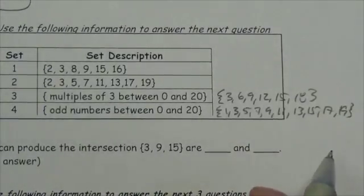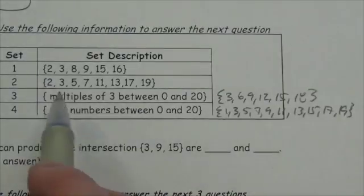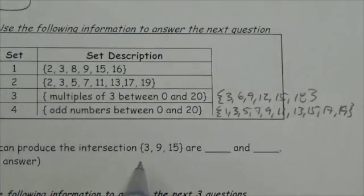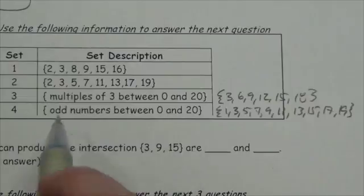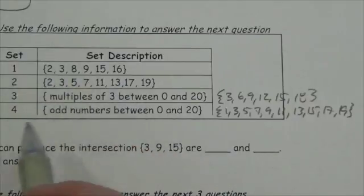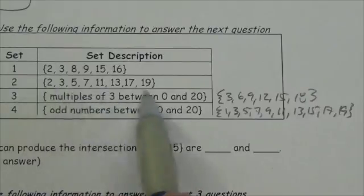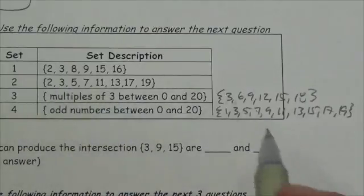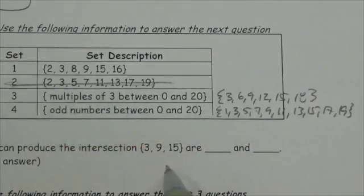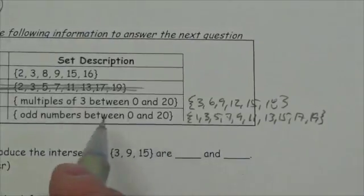Now where do these things intersect? Let's just take a look at Set 1 here. Set 1 has got 3, 9, and 15. Set 2 has got 3, but doesn't have 9, so Set 2 can't work because Set 2 doesn't even have 9 and 15 in it.